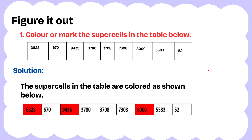Let us start the exercise problems. Color or mark the supercell in the table below. When we compare 6828 with 670 and there is no other number, 6828 is colored in red, so this is a supercell. When compared with 670, it is less, so we are not marking it. When we compare 9435 with 670 and 3780, 9435 is greater than both. Similarly, 8000. So these three are the supercells.